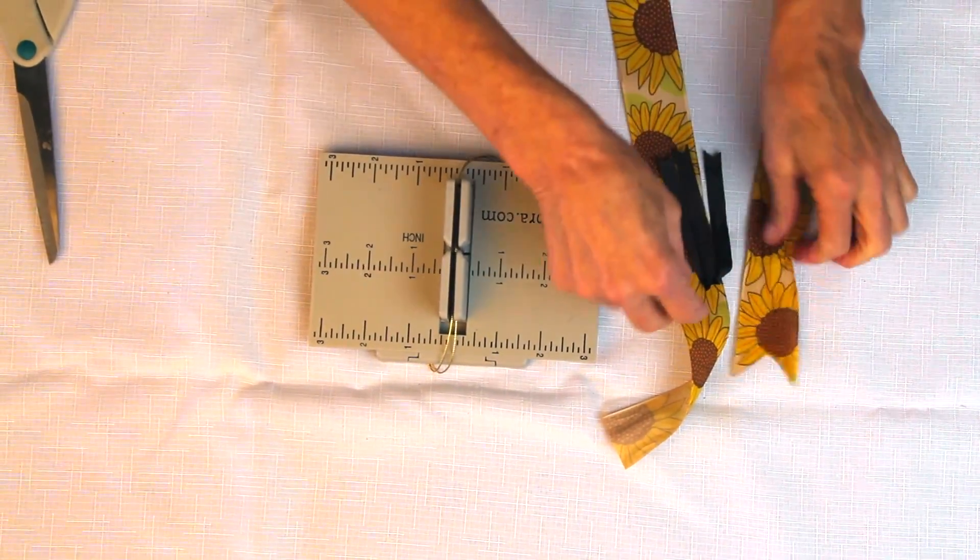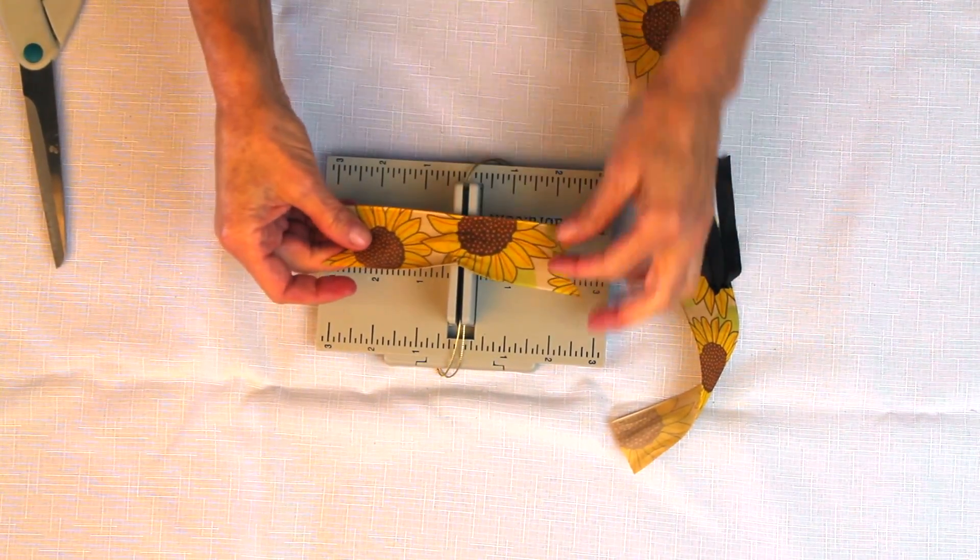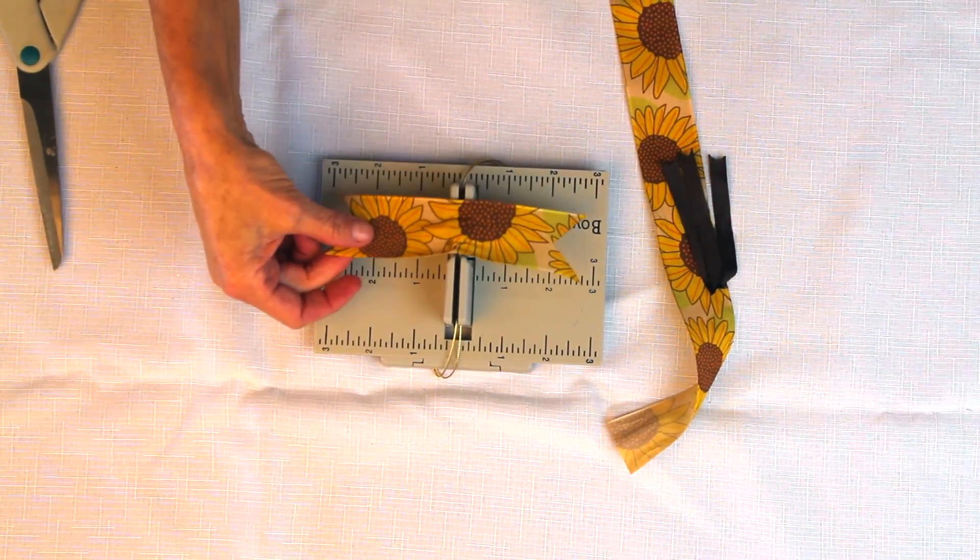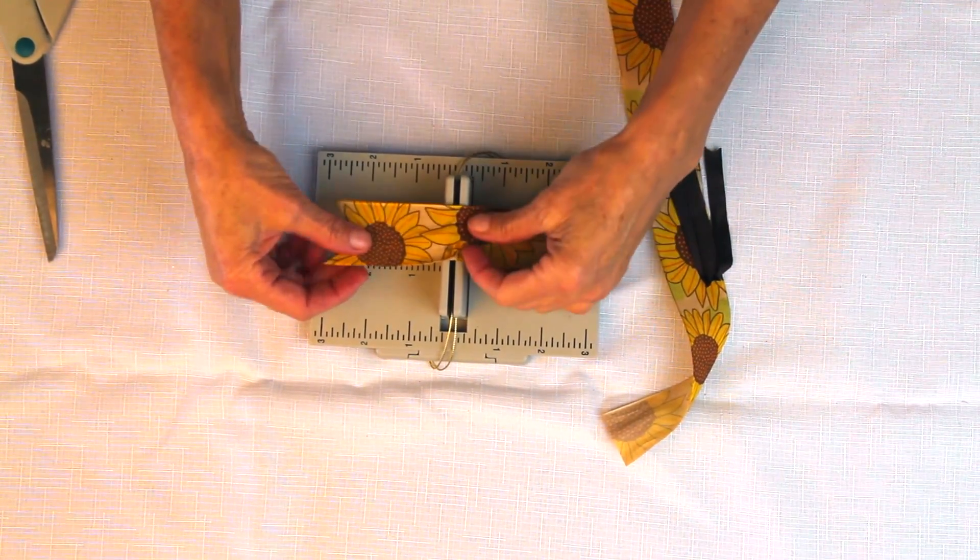I love this ribbon because it's so cute for a fall bow. I'm going to take this, we've already cut this, so it's about a 5 inch long piece of ribbon.